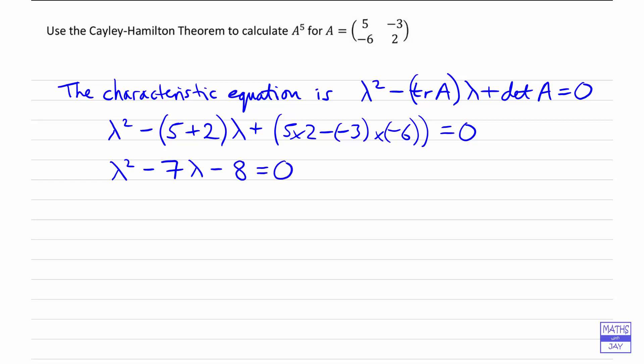So the characteristic equation for this particular matrix is λ² - 7λ - 8 = 0. In another video we've seen how to use that equation to find the eigenvalues of the matrix, but that's not what we want to do here. Here we want to use the Cayley-Hamilton theorem, which tells us that a matrix is a solution of its own characteristic equation.